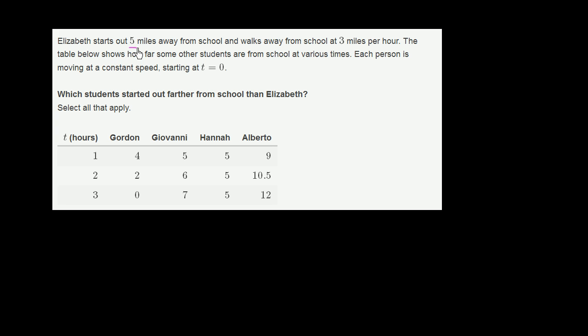Elizabeth starts out 5 miles away from school and walks away from school at 3 miles per hour. So she's already 5 miles away, and she's going to walk even further away at 3 miles per hour.